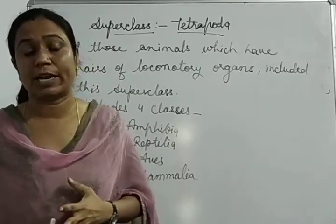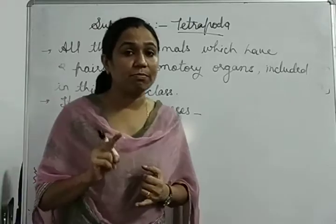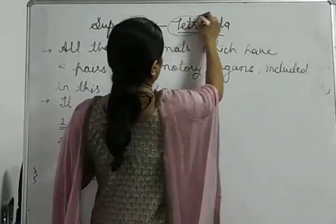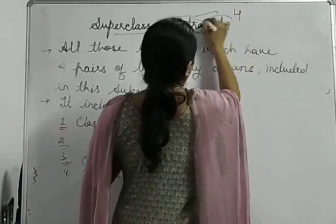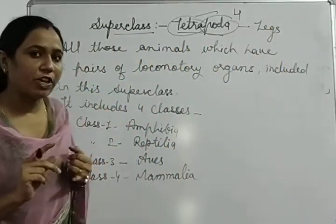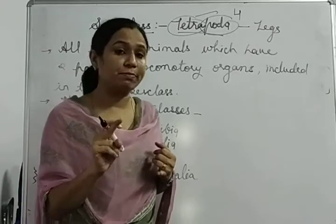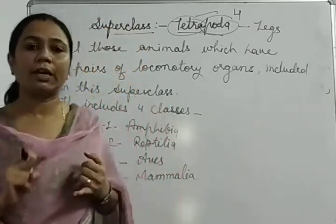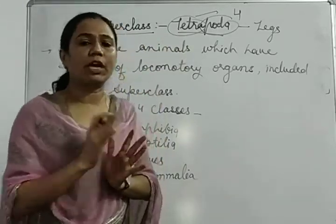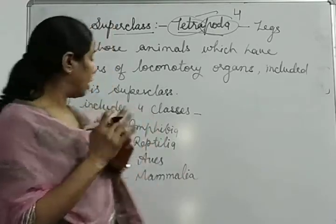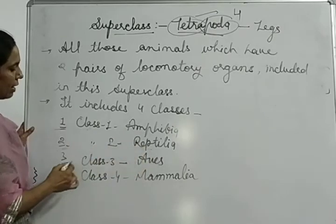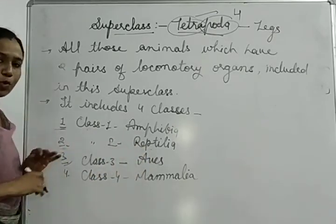Now we will move towards another superclass which is Tetrapoda. The term tetrapoda means 'tetra' i.e. four, and 'poda' i.e. legs. That means all those animals in which two pairs of legs or limbs are present as locomotory organs are included in superclass Tetrapoda. Superclass Tetrapoda includes four different classes: class 1 is Amphibia, class 2 is Reptilia, class 3 is Aves, and class 4 is Mammalia.